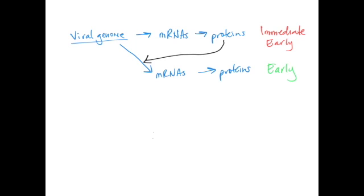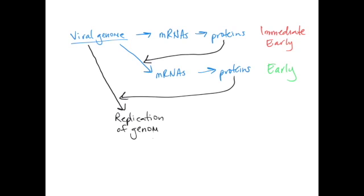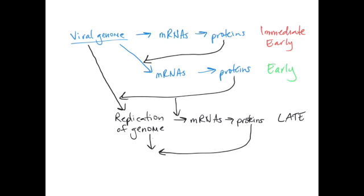Like with our immediate early proteins, these early proteins will have a job to do, and that job generally involves switching biosynthesis from mRNA production to genome replication, along with stimulating transcription of messenger RNAs that will give rise to what we call the late proteins. These late proteins are actually our capsid proteins and our envelope proteins, and they will combine with newly replicated viral genomes to make our virions.